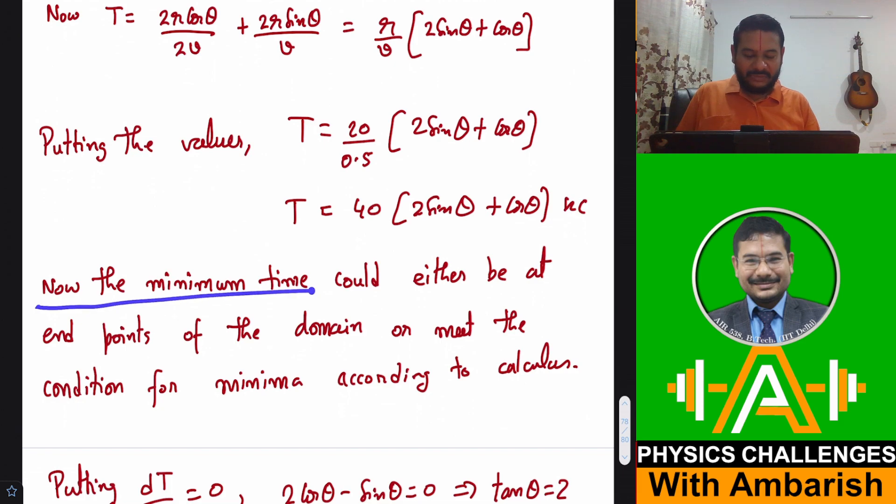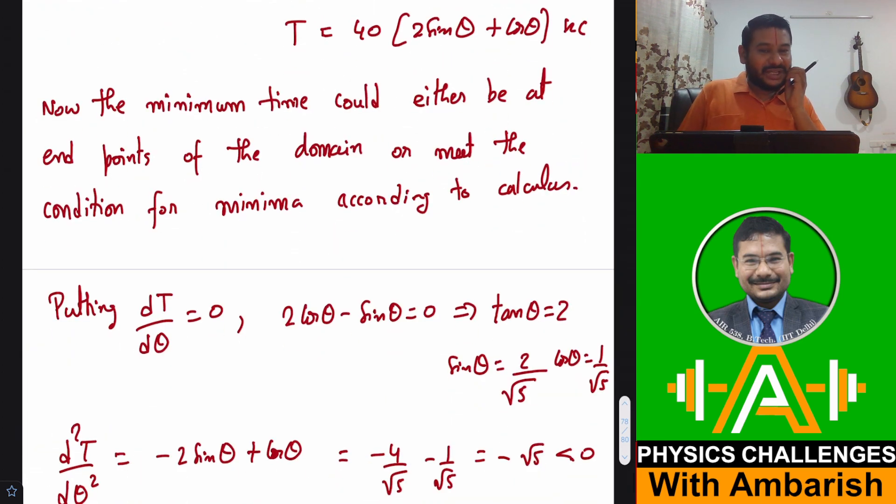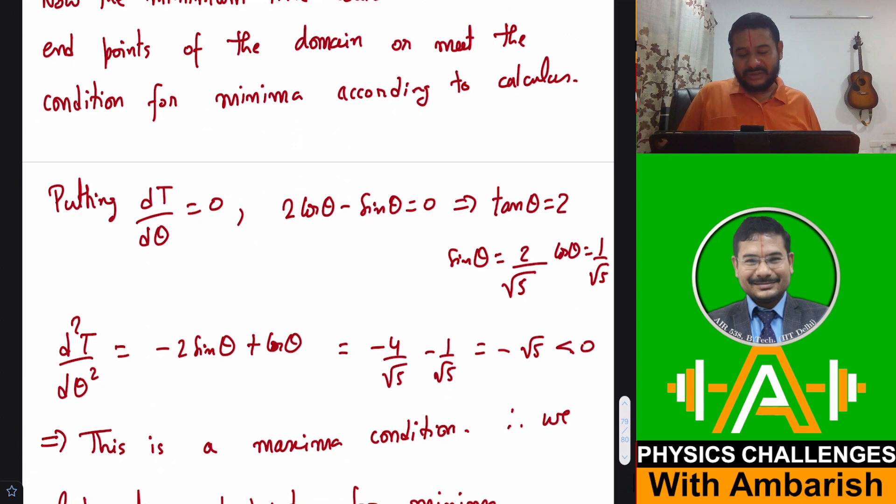Now the minimum time could either be at the end points of the domain or meet the condition of minima according to calculus that is the derivative being 0. So first I am checking what happens when I make the derivative 0. If I put dθ/dt equal to 0, I get tan θ equal to 2 or cos θ is 1 by root 5 and sin θ is 2 by root 5.